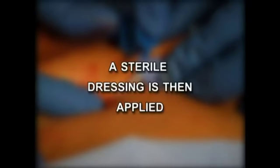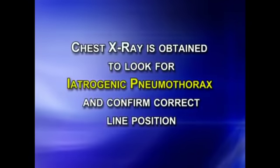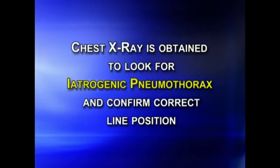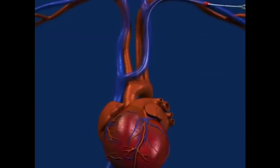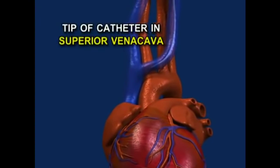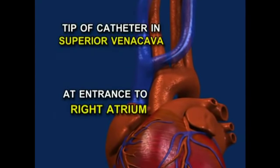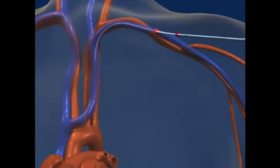A sterile dressing is then applied. A chest x-ray is obtained to look for an iatrogenic pneumothorax and confirm correct line position. The optimal position is to have the tip of the catheter in the superior vena cava at the entrance to the right atrium, but placement anywhere in the superior vena cava is acceptable.